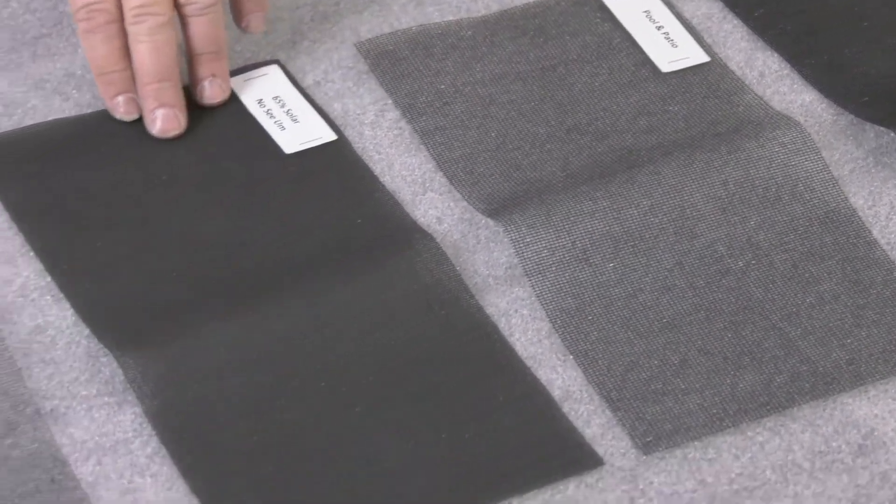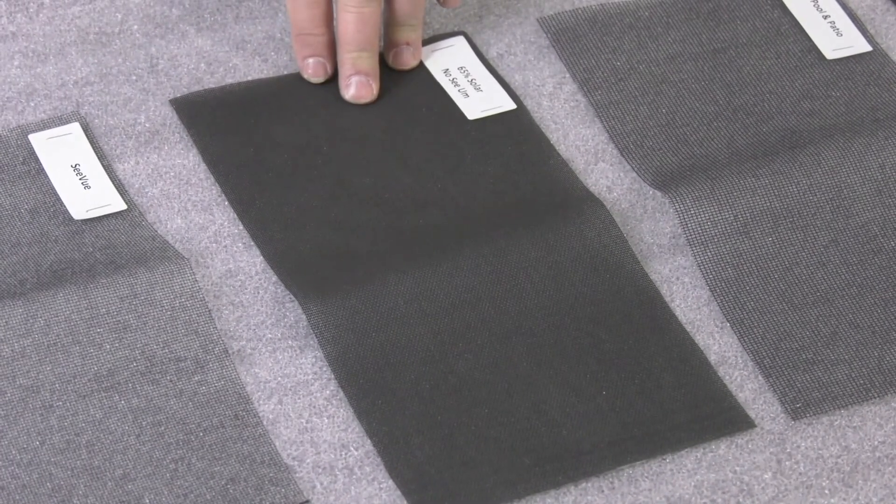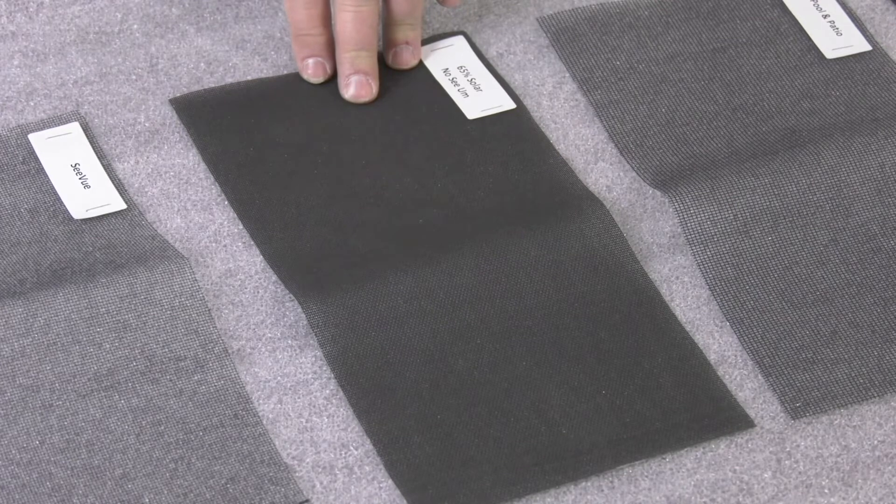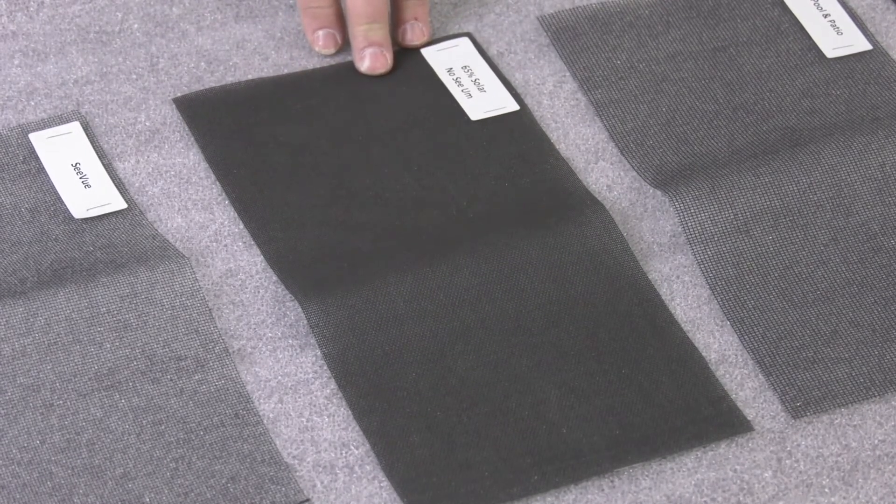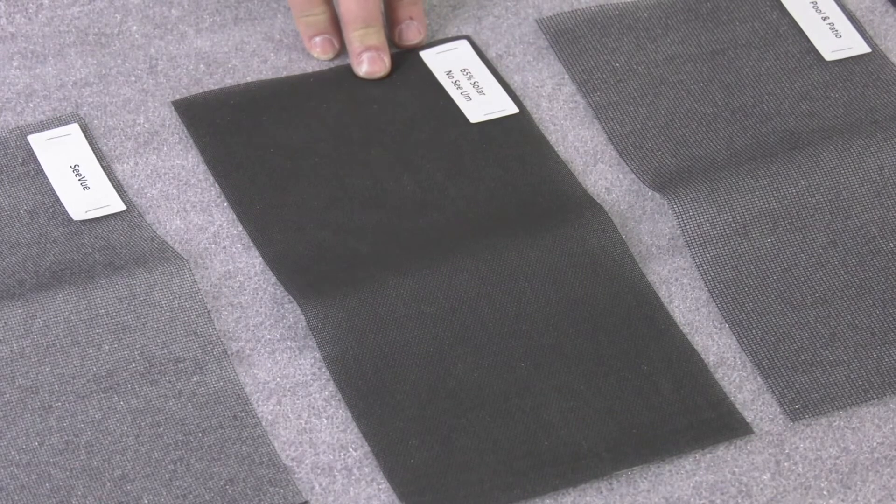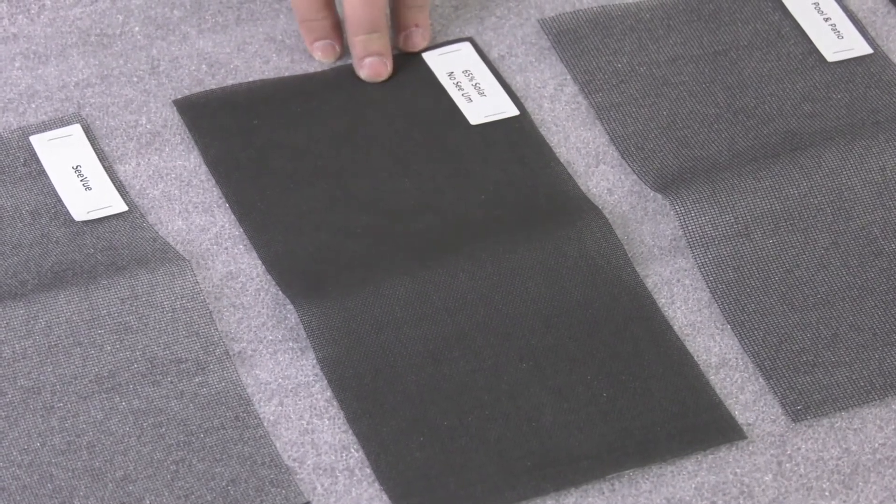Next is your solar insect screen. This installs anywhere standard fabric is needed. It blocks 65 percent of the sun's rays. It's a 0.014 wire diameter, installs with a 0.310 flat spline. It's a 20 by 30 mesh, and available in 3 to 7 foot rolls.